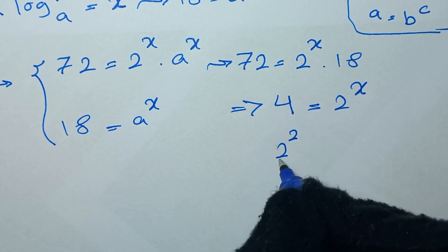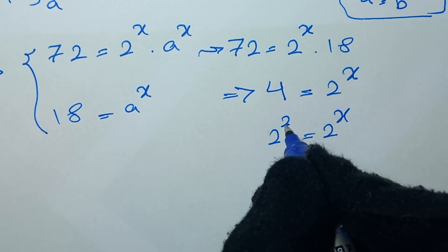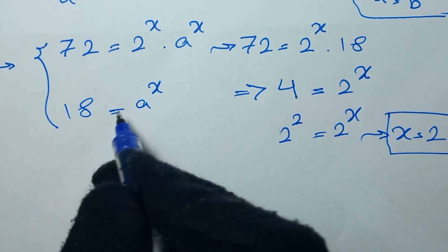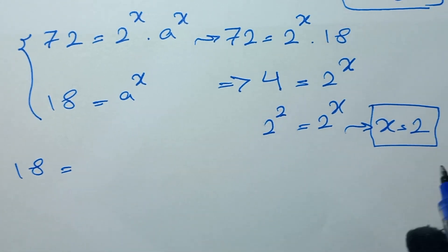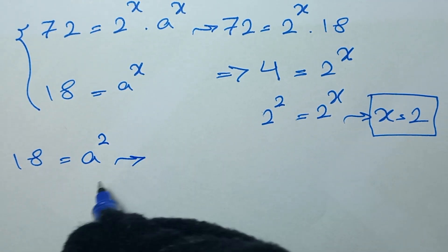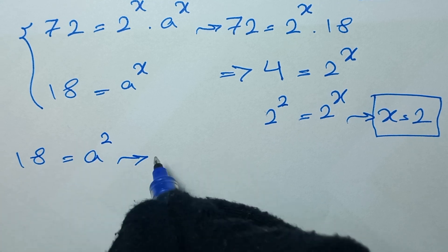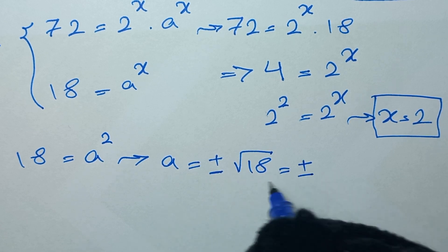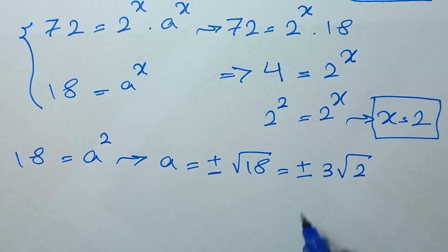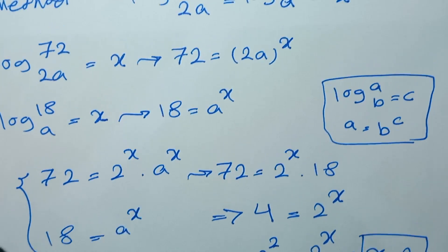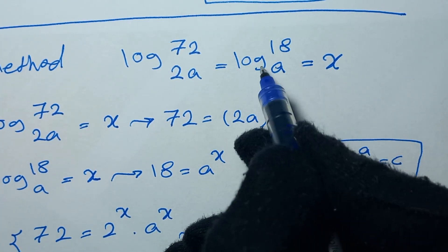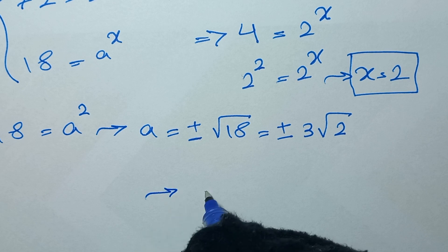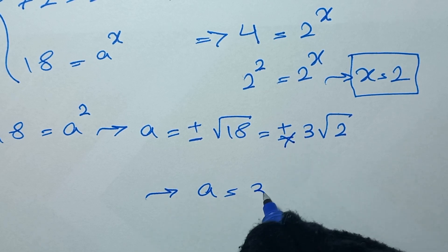We write 4 as 2 to the power of 2, so 2 to the power of 2 equals 2 to the power of x. Comparing both sides, x equals 2. Now we find a: 18 equals a to the power of x, which is a to the power of 2. Applying the square root to both sides, a equals plus or minus the square root of 18, which is plus or minus 3√2. We reject the negative answer because a is the base of a logarithm and the base cannot be negative. Therefore a equals 3√2.